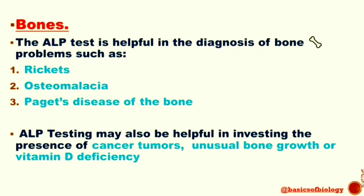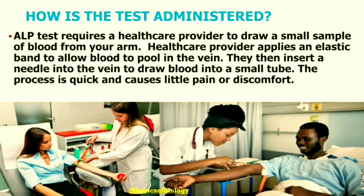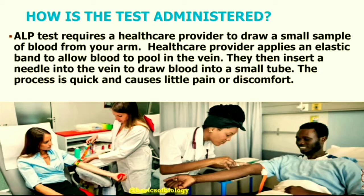Now we'll see how this alkaline phosphatase test is administered. An ALP test requires a healthcare provider to draw a small sample of blood from your arm, done in the clinical lab. A healthcare provider cleans the skin on the front side of your elbow with an antiseptic and applies an elastic band to allow blood to pool in the vein. They then insert a needle into the vein to draw blood into a small tube. This process is quick and causes little pain or discomfort.